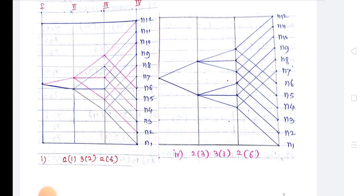These would include determining the following: the number of shafts in the gearbox, the number of gears on each shaft, the layout or arrangement of the gears, and the number of teeth on each gear. These are the basic requirements of the gearing diagram.